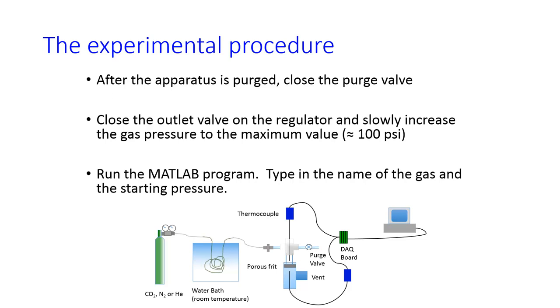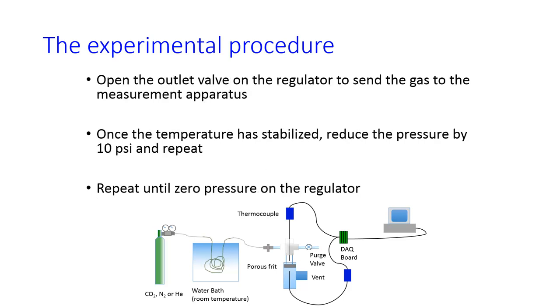So after the apparatus is purged, you can close the purge valve and increase the pressure on the output regulator to the maximum that you're going to use, 90 or 100 psi. When you run the MATLAB program, it'll ask you to type in the name of the gas and the starting pressure, and then it will start collecting points of delta T.